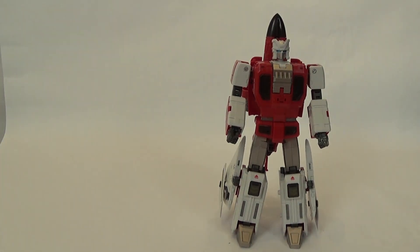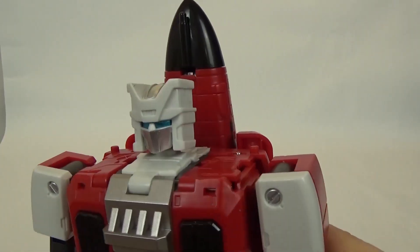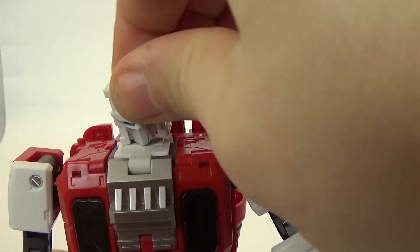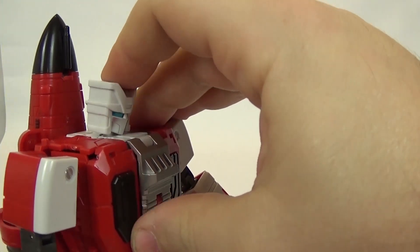Let's go ahead and take a quick look at Flyfire here. You can see his head is on a ball joint. You can get a little bit of rotation on that, up about that much, down about that much.